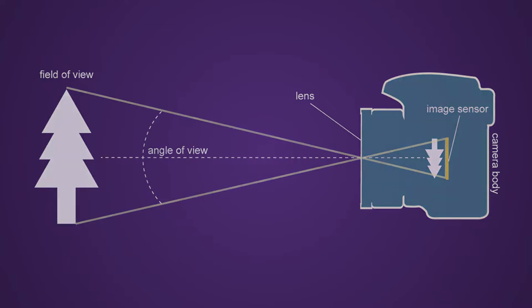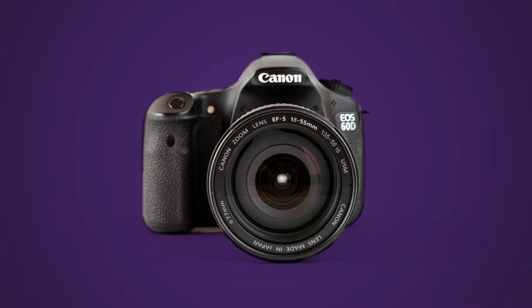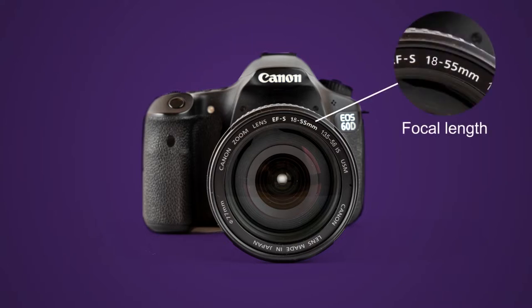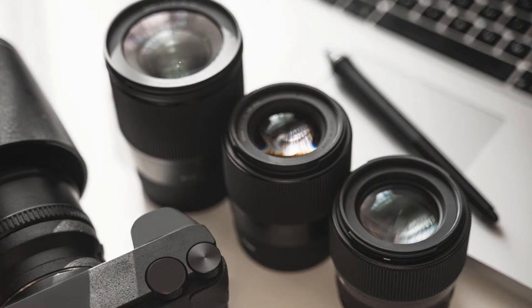There are numbers on the front of the lens. The numbers with the millimeter measurement after them refer to the focal length — for example, 18 to 55 millimeters. There are also numbers that refer to the minimum and maximum aperture. For example, the numbers 1:3.5 to 5.6 tell you that the maximum aperture is 3.5 and the minimum aperture is 5.6. Prime lenses have a fixed focal length.